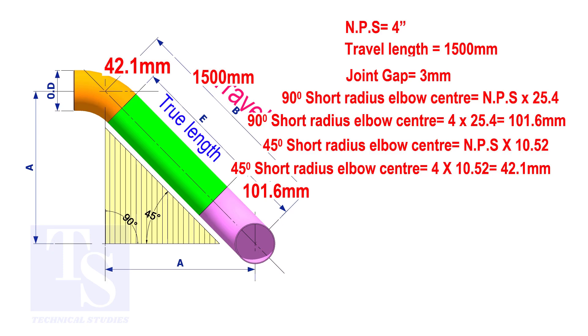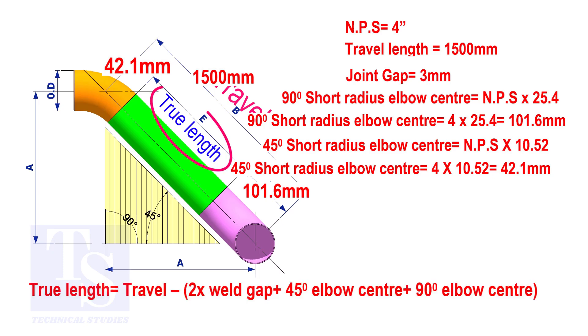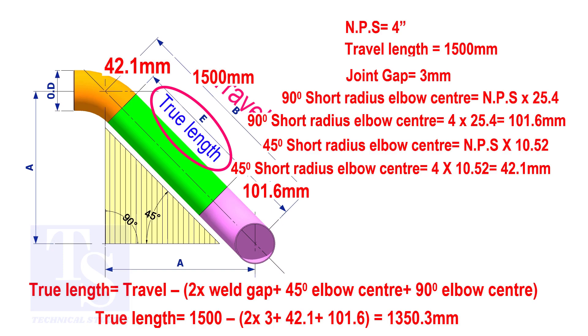To calculate the true length of the pipe, subtract two weld gaps plus both elbow centers from the travel length. The true length of the pipe is 1,350.3 millimeters.